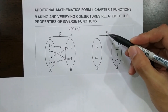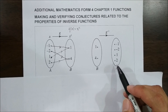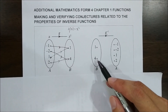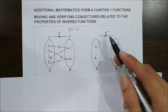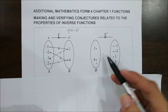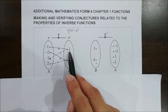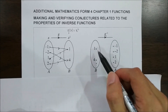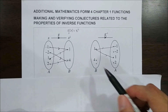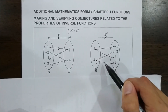For the inverse of g, we switch the positions of set B and set A — the range becomes the domain of g-inverse. We can use this information to draw the arrow diagram. Since -1 and 1 both map to 1, for g-inverse, 1 maps to both -1 and 1. Likewise, 4 maps to both -2 and 2.